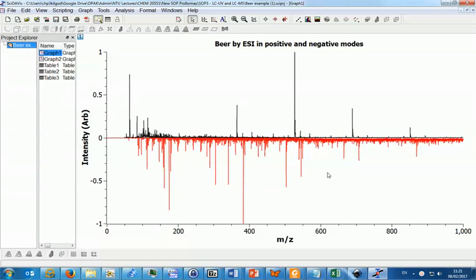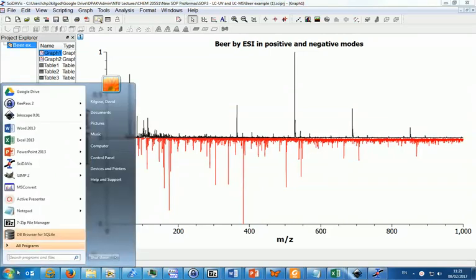So now we've saved the spectrum as an SVG file, we can open that up in a vector graphics program such as Inkscape, and there's instructions on how to download Inkscape onto your own computer in the notes. Open Inkscape.